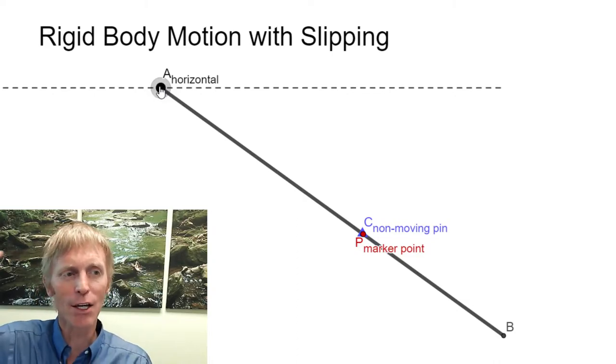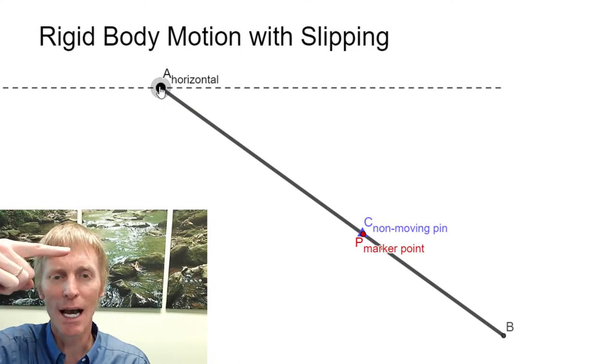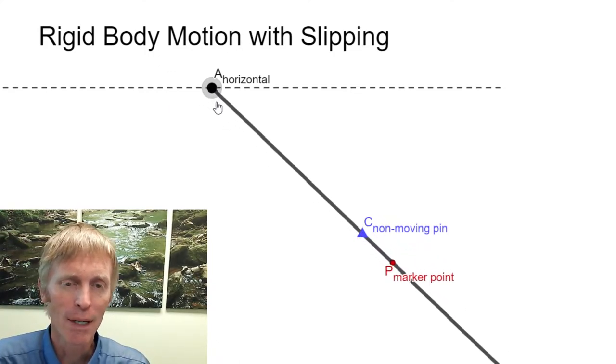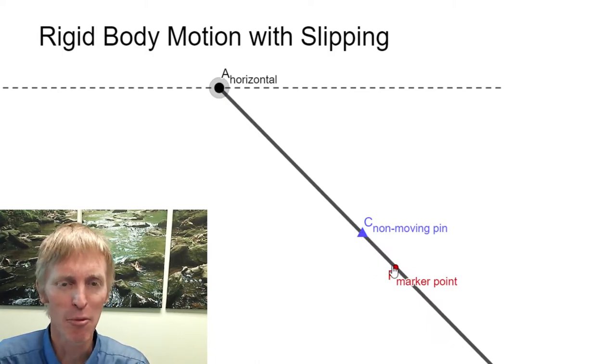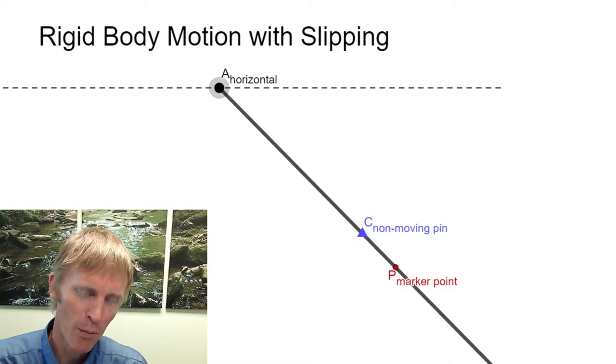But as we move A going to the right, notice how the marker point is going to depart from point C. And we can actually draw a vector to show that the relative velocity, the velocity of P relative to C, is moving down towards point B.